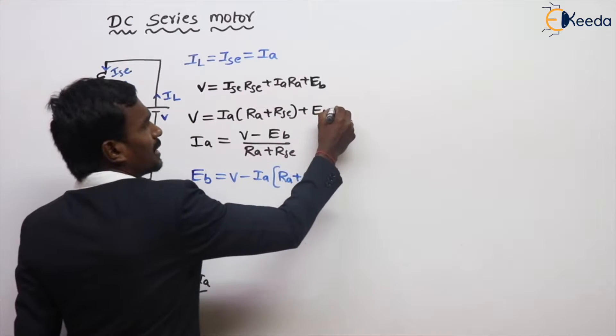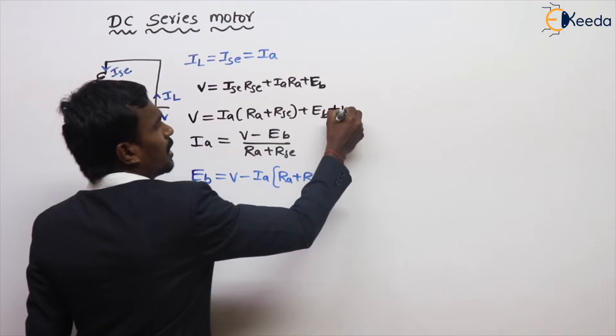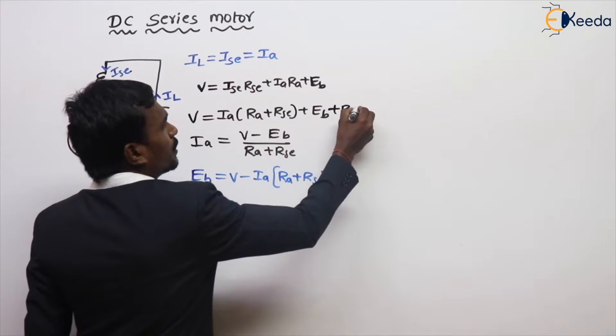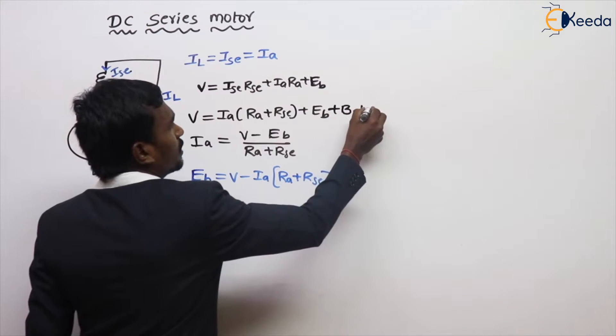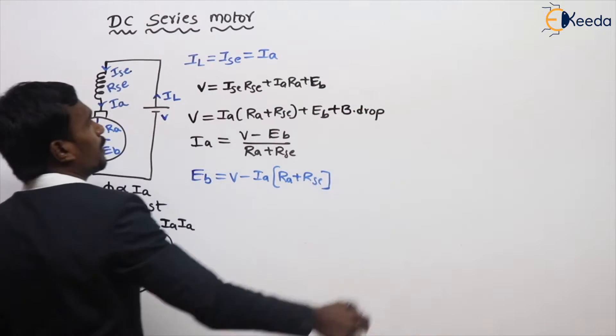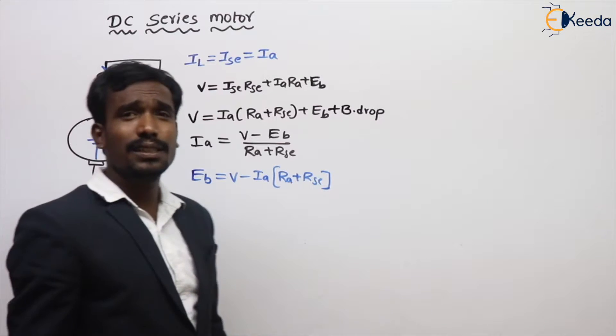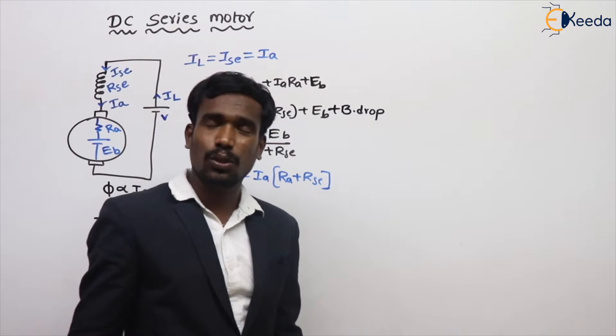Note that this equation is not exact — there is an additional voltage drop due to the brush contact, called the brush drop. This completes the DC series motor voltage equation.